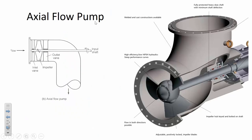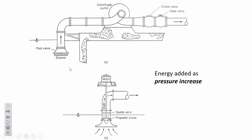An axial flow pump adds energy the same way — an impeller accelerates the fluid and adds pressure — but it allows a really long drive shaft mounted at the surface with the impeller submerged deep underground, potentially hundreds of feet down in an aquifer, while the motor stays at the surface where electricity and cooling are available. Unlike radial flow pumps, axial flow pumps do not change the direction of the flow.